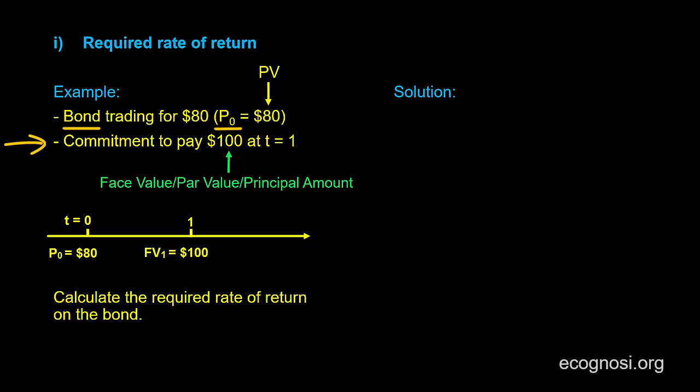So given the price and face value of the bond, what is the implicit interest rate? And that interest rate is what we previously interpreted as the required rate of return on this bond.